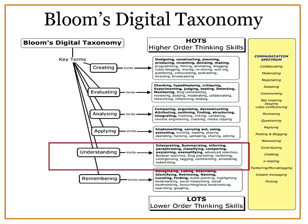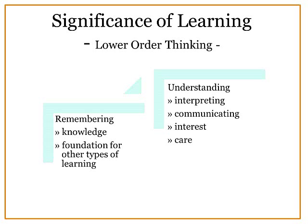In terms of understanding, the next level in lower-order thinking, students are interpreting information. Whether they're summarizing, explaining, twittering, or tagging, they are also communicating that information. If they're communicating it, that shows students are interested in the material and care about the task at hand. The emphasis needs to be on the significance of these stages and the strategies students can use through each stage of thinking.